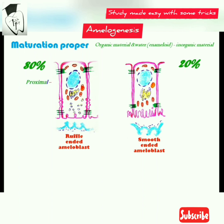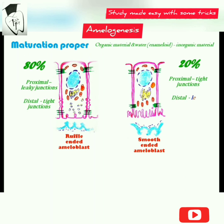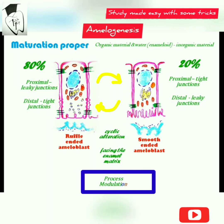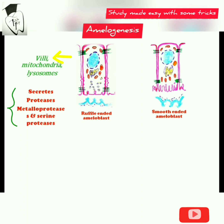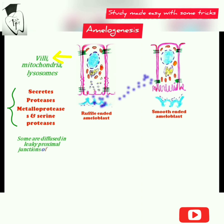Ruffle-ended ameloblasts have proximal leaky junctions and distal tight junctions, whereas smooth-ended ameloblasts have tight proximal junctions and distal leaky junctions — completely opposite to ruffle-ended. Ameloblasts undergo cyclic alternation between ruffle-ended and smooth-ended forms. The ruffle-ended ameloblasts facing the enamel matrix have many mitochondria and lysosomes; they secrete proteases such as metalloproteases and serine proteases. Some are diffused through the leaky proximal junctions of smooth-ended ameloblasts, and some are engulfed by ruffle-ended ameloblasts via endocytosis.